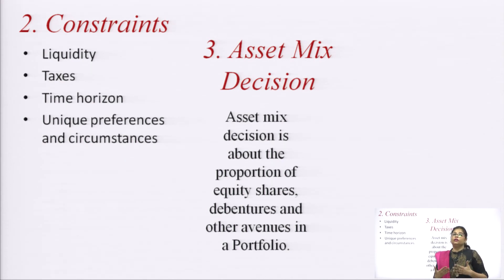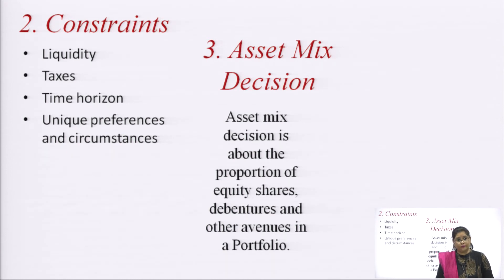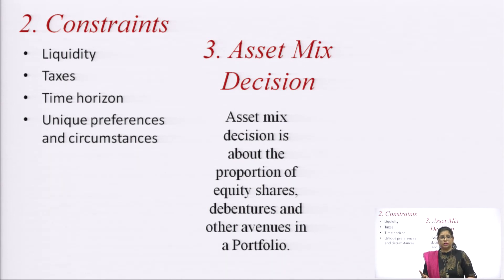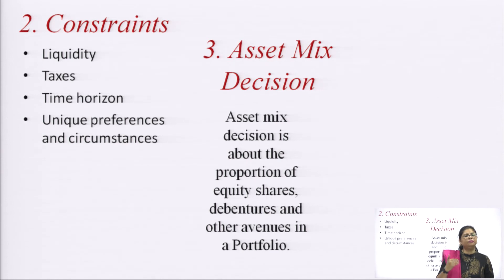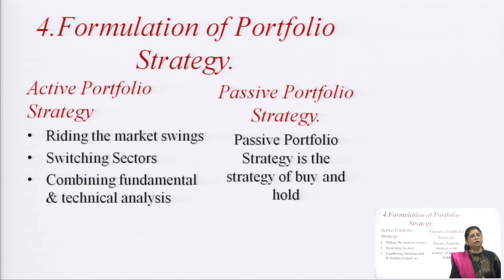The next phase is the asset mix decision — what proportion to divide our funds among equity shares, debentures, and other avenues. If an investor is ready to take risk, they can invest more in shares. If they prefer stability, they can invest more in fixed income options like debentures and bonds. Once the proportion is decided, the next step is to fix the portfolio strategy.